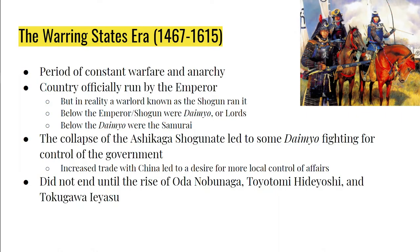The first section to talk about is called the Warring States Era and it lasts from 1467 to 1615. This is a period of constant internal war and anarchy that disrupts all of Japanese society. The country is technically run by an emperor, but the emperor has given power to a warlord known as the Shogun. Below the Shogun are lords known as Daimyo — feudal lords who own the land that the peasants work on. Controlled by the Daimyo are samurai, the elite soldiers of the Japanese military who serve their lord.